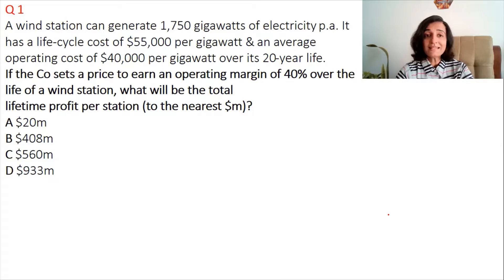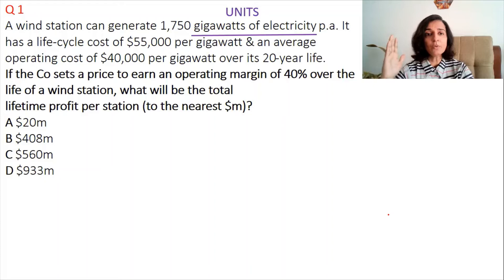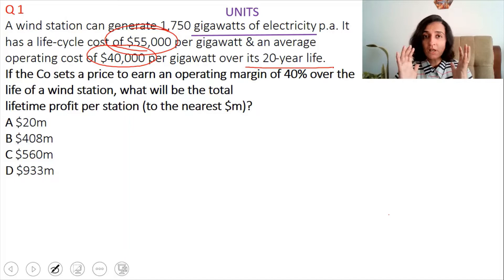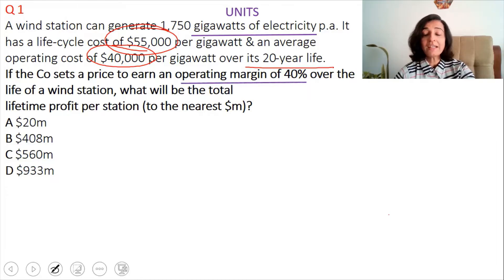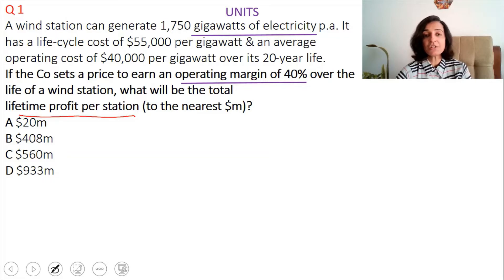Question number one: a wind station can generate 1,750 gigawatts of electricity per annum — let's simplify that as 1,750 units per annum. It has a life cycle cost of $55,000 per unit and an average operating cost of $40,000 per unit over its 20-year life. If the company sets a price to earn an operating margin of 40% over the life of a wind station, what will be the total lifetime profit per station to the nearest million dollar?